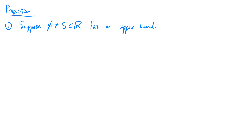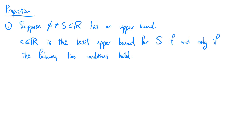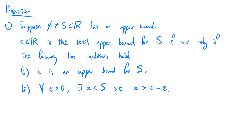The following proposition gives us an alternative method to show that a real number is the least upper bound or the greatest lower bound for a set. Suppose s is a non-empty subset of the real numbers and it has an upper bound. Real number c is the least upper bound for s if and only if: (1) c is an upper bound for s, and (2) for all epsilon greater than 0, there exists x in s such that x is greater than c minus epsilon.